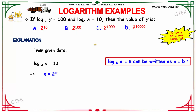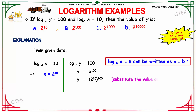Our next question: log y to the base x equals 100, and log x to the base 2 equals 10. Then what will be your value of y? The options are 2 to the power 10, 2 to the power 100, 2 to the power 1000, and 2 to the power 10,000. This is an important one as it has appeared in GATE, government exams, and CAT.